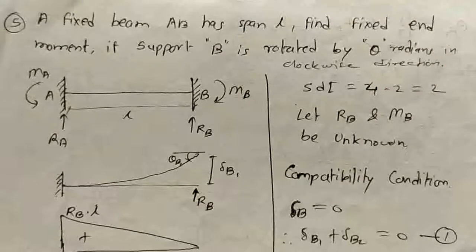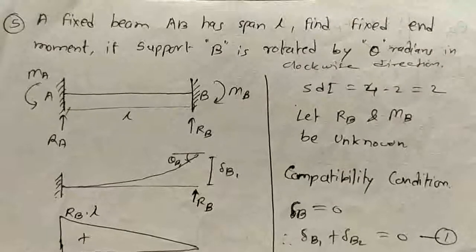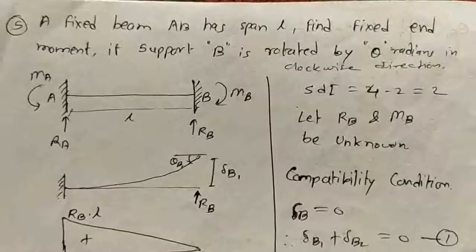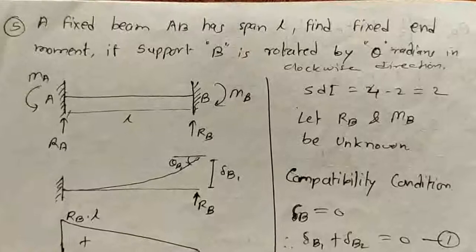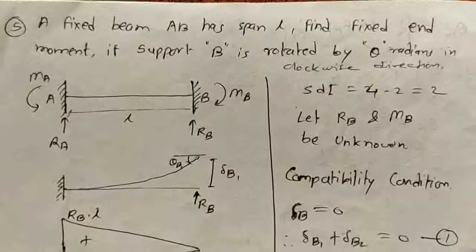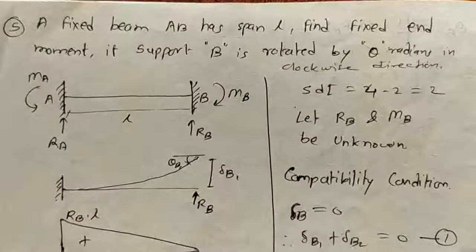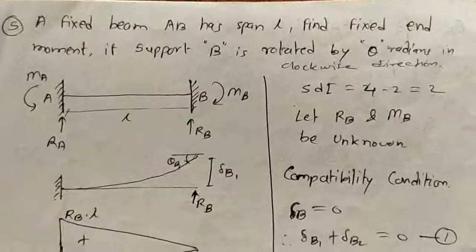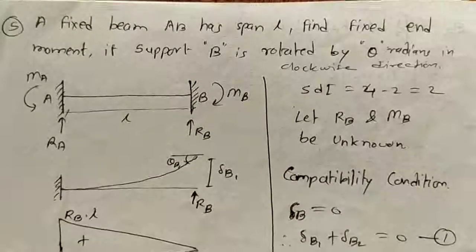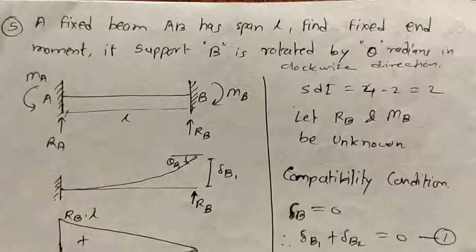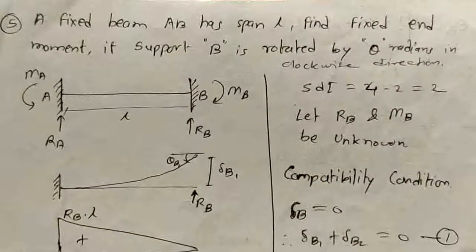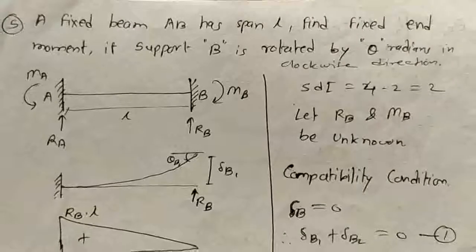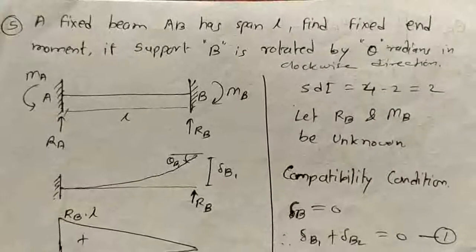Hello, myself Mr. Amit Kusnadi. Here we want to analyze a given fixed beam by using the consistent deformation method. In this example, there is no applied loading on this beam, but it is given that support B is rotated by theta radians in the clockwise direction.